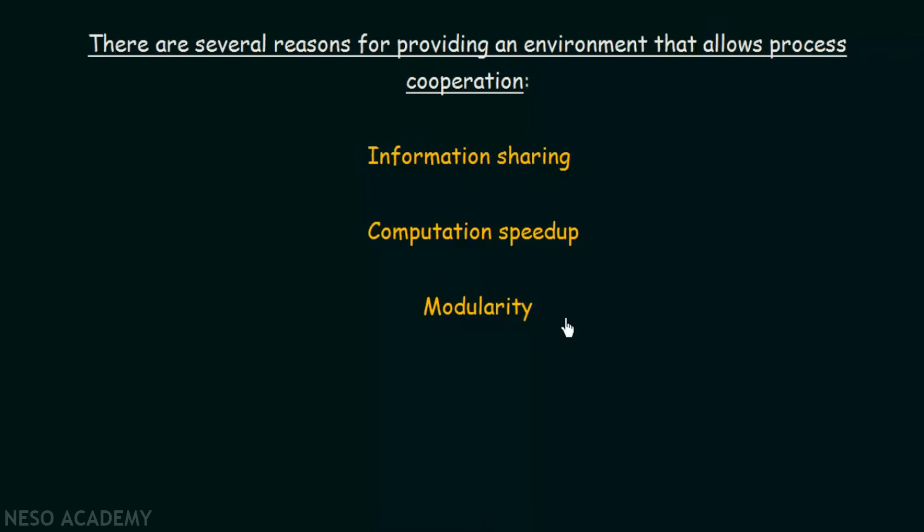The next point is modularity. Modularity means we want to design the system by dividing it into separate modules. When we are designing a system, one person is not designing the entire system — we divide it into different modules which will later be put together to achieve a single goal. These modules will need to communicate or cooperate with each other, so this is another reason why we need to provide an environment that allows process cooperation in order to achieve modularity in our system.